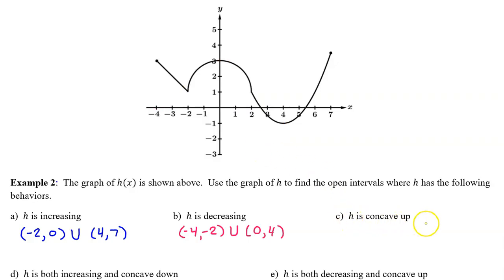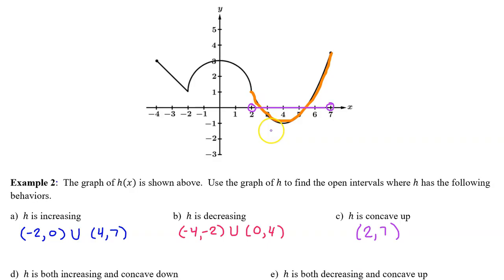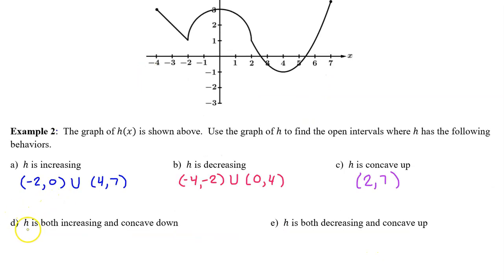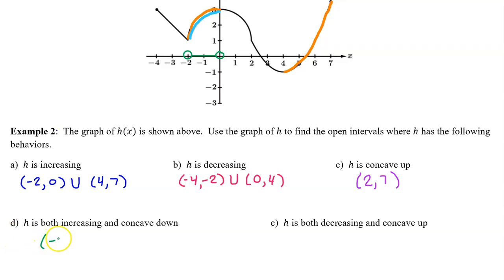Part c: where is h concave up? We look for that bowl shape. It seems to be concave up starting at a certain point and continuing to the end, so h is concave up on the open interval from 2 to 7. Part d: where is h both increasing and concave down? h is increasing on two intervals, but the portion that is also concave down is just one section — the open interval from negative 2 to 0.